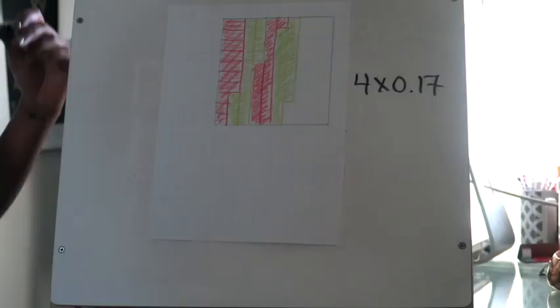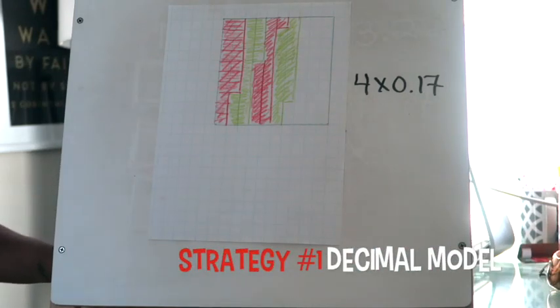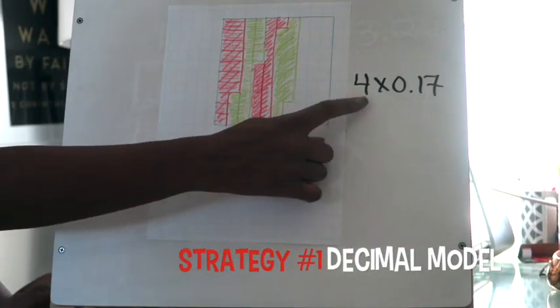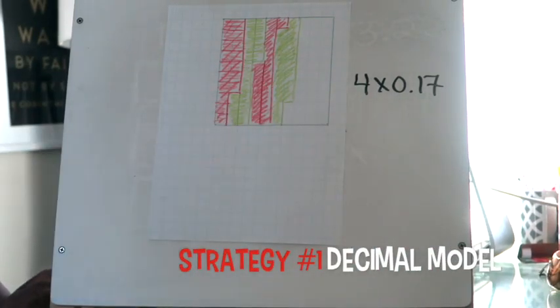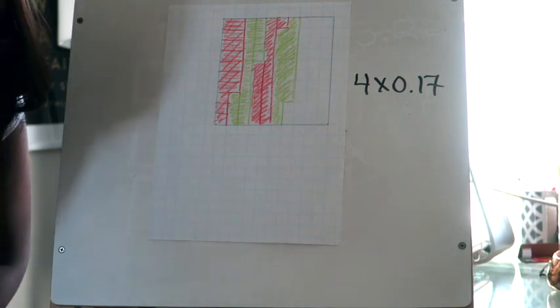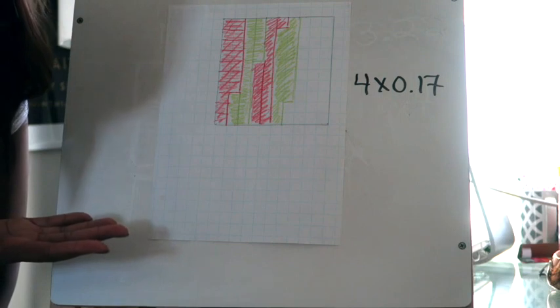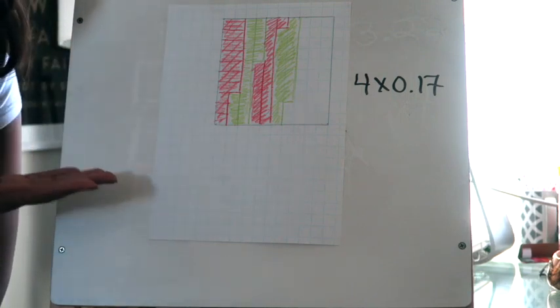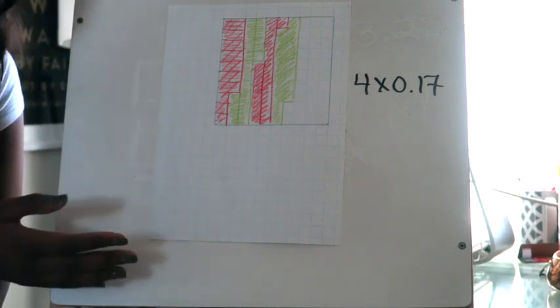I'm going to flip the camera around, set up two examples for you, and then I'll have some closing statements. In today's lesson we're multiplying a whole number times a decimal using two different strategies. The first strategy is going to be referred to as using a decimal model.